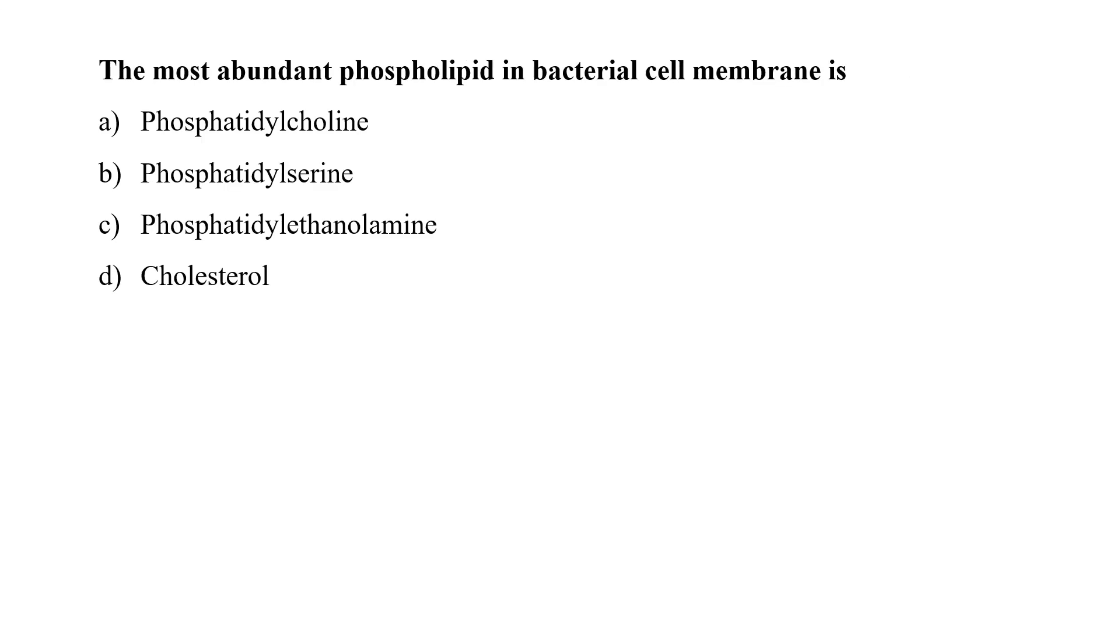The most abundant phospholipid in bacterial cell membrane is phosphatidylcholine, phosphatidylserine, phosphatidylethanolamine, or cholesterol. Bacterial plasma membranes are often composed of phosphatidylethanolamine, that is also known as neutral phospholipid, and contains no cholesterol. In general, gram-positive bacteria have higher content of phosphatidylethanolamine than gram-negative bacteria. So here option C is the correct answer.